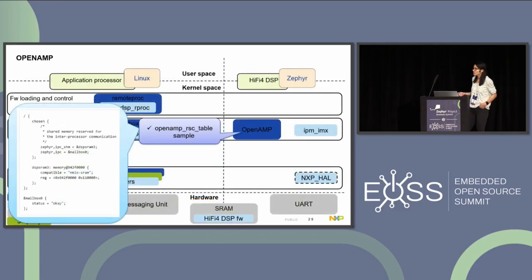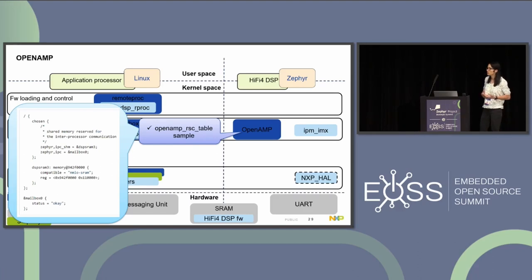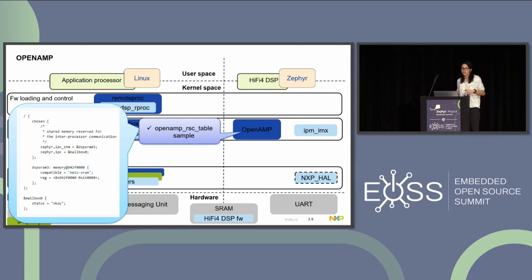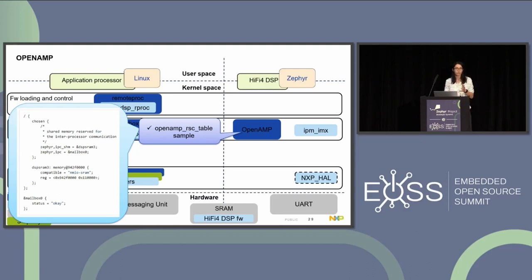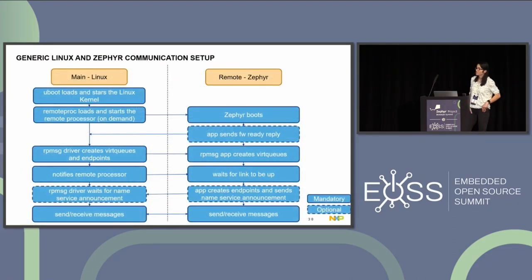To enable this, we just used the OpenAMP sample from Zephyr — it's just a configuration you set to yes. But in order for this application to work on our specific target, you have to add a DTS overlay where you mention the shared memory and the mailbox node for IPC. With all this, we now also have communication between the two cores.